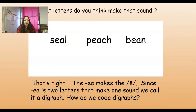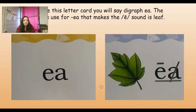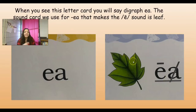Since E-A is two letters that make one sound, we call it a digraph. And how do we code digraphs? All of our digraphs have what underneath them? We underline them. So we'll underline the E-A. And since it says a long E, the E has the macron on top and the A is marked off because we don't hear the A at all — it covers up that sound. Same thing in peach: E-A is underlined, E is long, the A is marked off. When you see this letter card, you're going to say digraph E-A. The sound card for E-A that makes the long E sound is leaf. So we say: leaf E, digraph E-A.